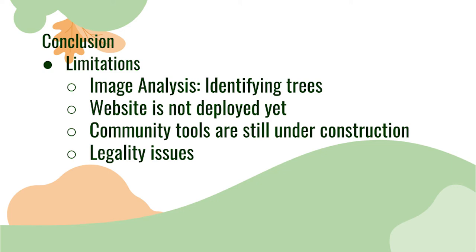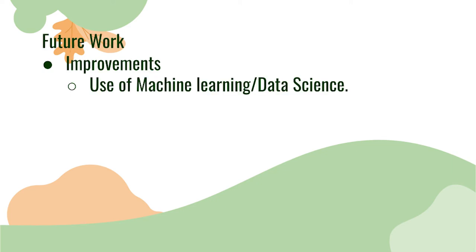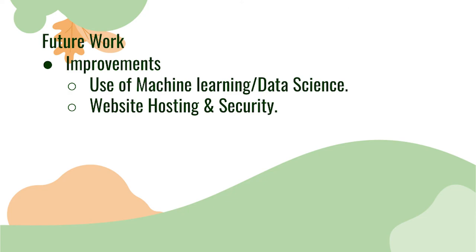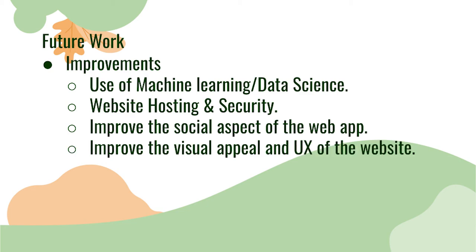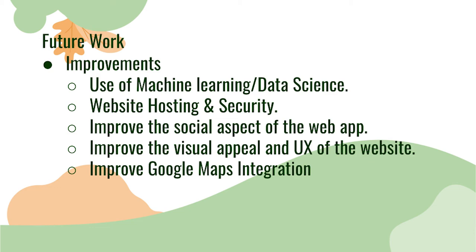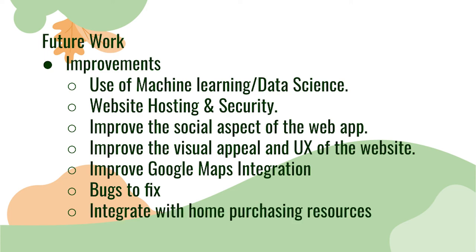For future improvements, we could use machine learning and data science for more accurate image analysis of environmental data. We could also implement a more secure backend — instead of using environment variables and hosting locally, we could use password vaults and deploy to the cloud so our web app email doesn't get scraped. Our community features are still in development, but we'd like to allow users to see top reviews, create posts, and view environmental issues using the Google Maps API. We'd also like to let users type in their home address to search for nearby events and attractions. We need to fix bugs such as losing authentication after a page refresh, and in the future we could integrate our product with websites like Zillow to impact home purchasing.